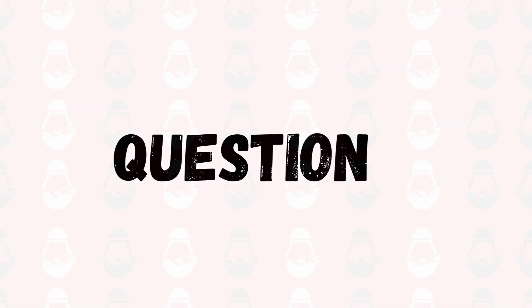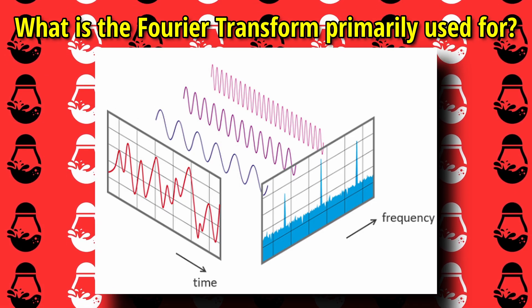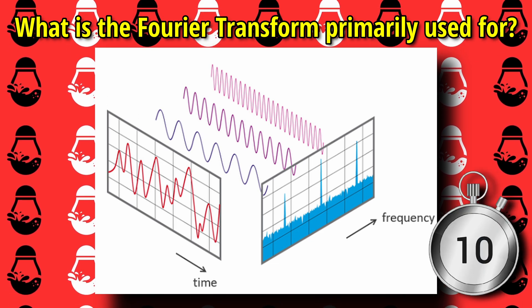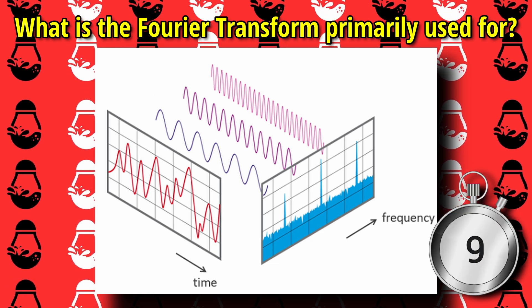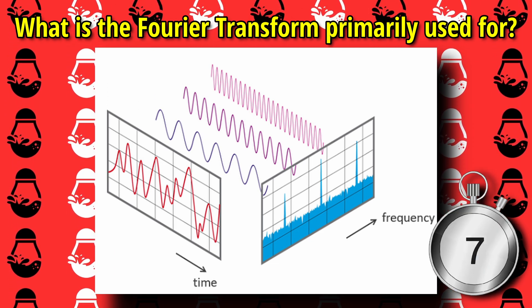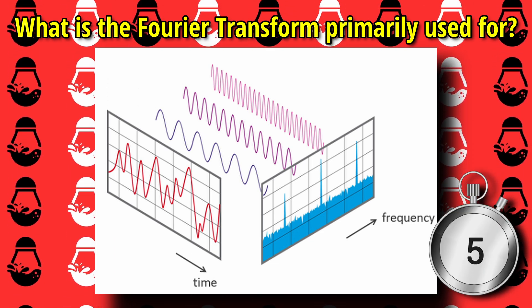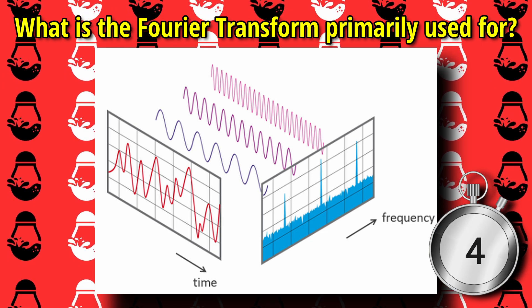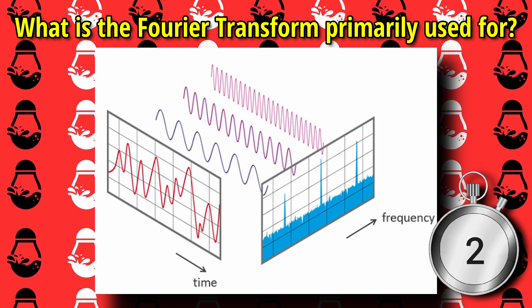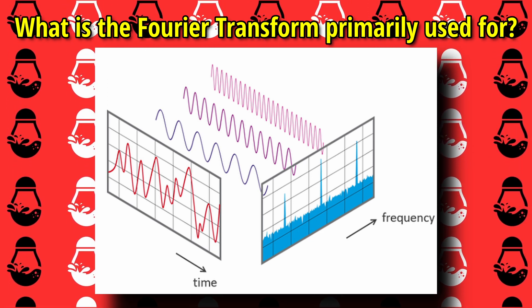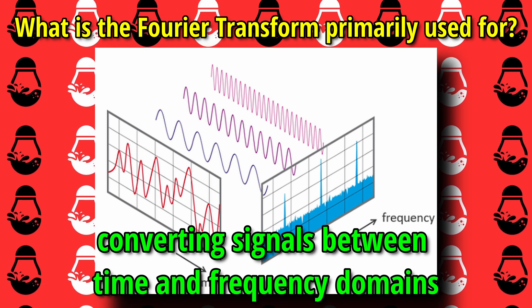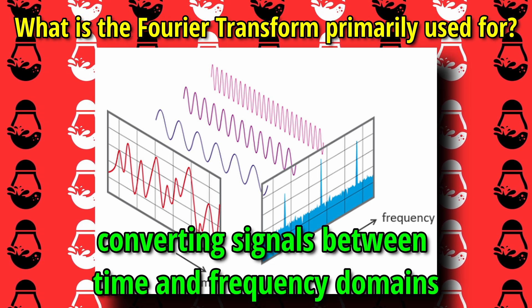Next question. What is the Fourier transform primarily used for? The answer is converting signals between time and frequency domains.